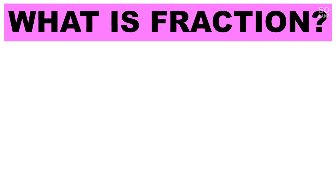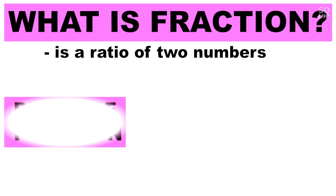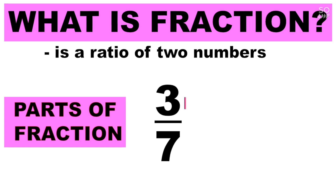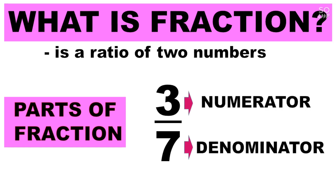First, what is a fraction? A fraction is a ratio of two numbers. We have parts of a fraction. For example, we have 3 over 7. 3 is what we call the numerator and 7 is what we call the denominator.